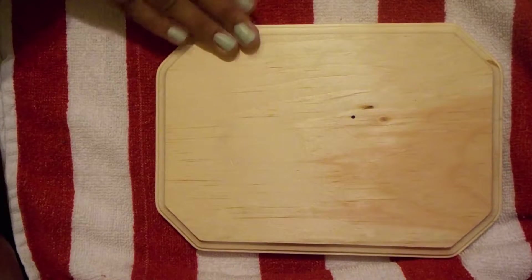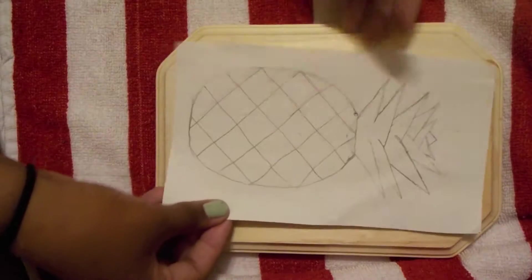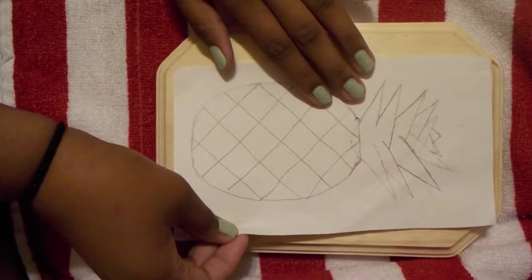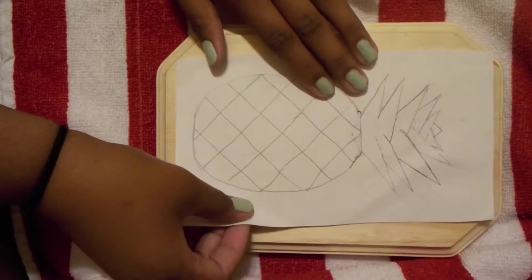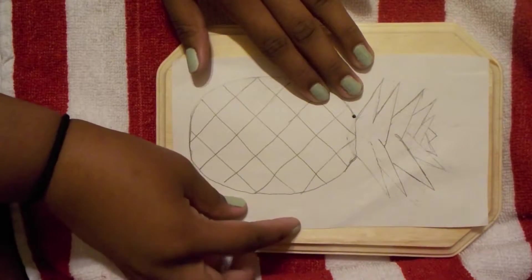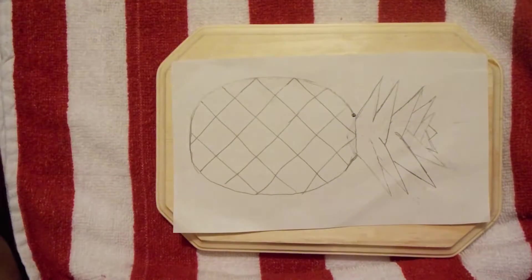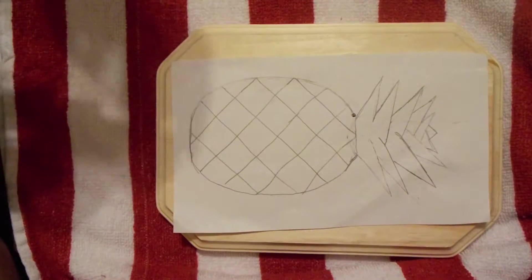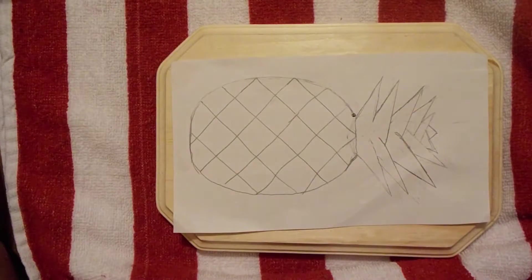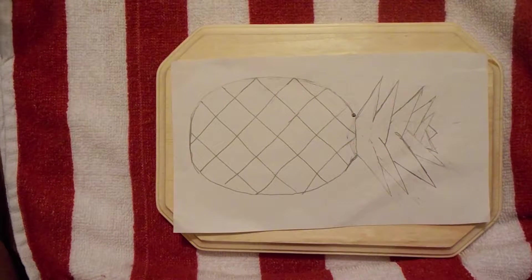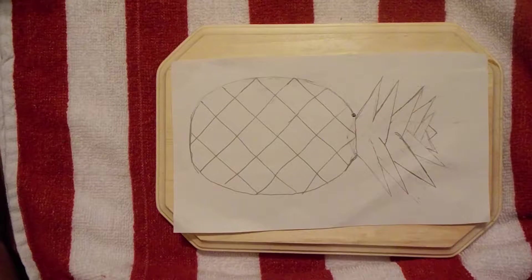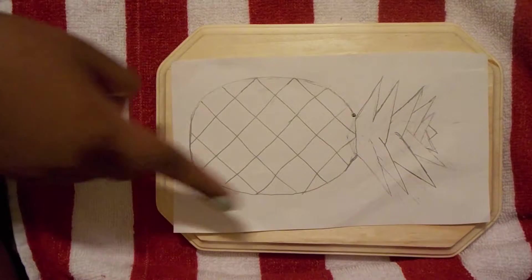Just grab your piece of wood and place the picture of the pineapple on the board. I'm going to take my tape. Now you can use scotch tape, masking tape, double sided tape, whatever you prefer. And I'm going to tape down the sides of the picture.